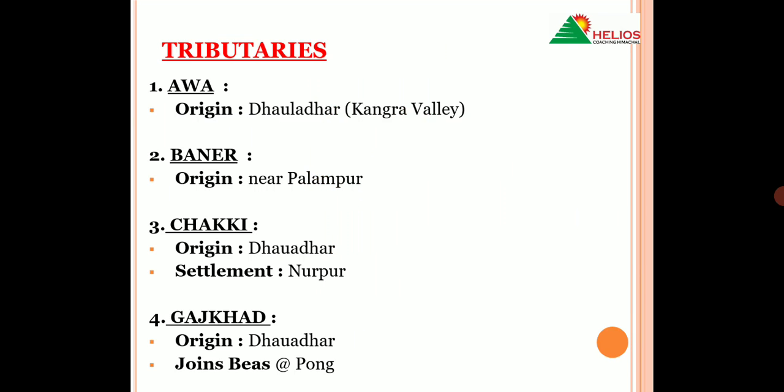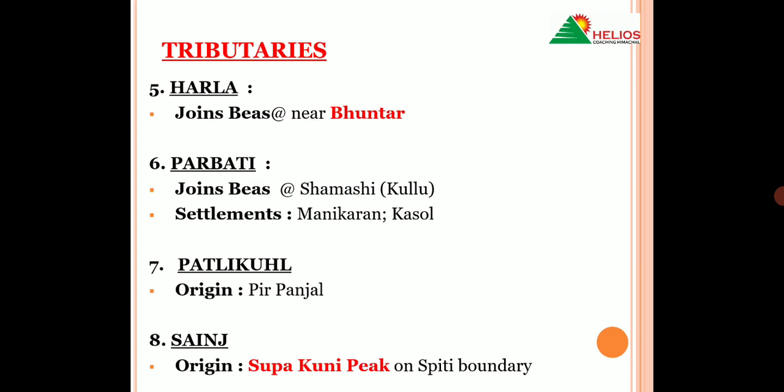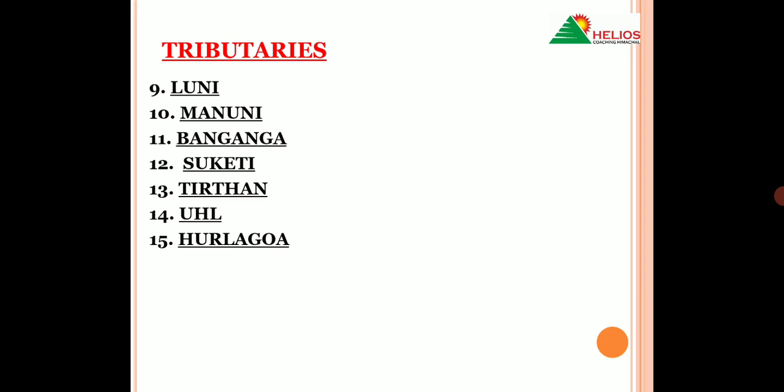Now let's talk about the tributaries of the Beas river. Pehli tributary hai Awa, jis ka origin hota hai Dholadhar se, Kangra valley mein. Baner, jo ki palampur ki nasdik se originate hoti hai. Agli hai Chakki Khad, jo ki Dholadhar se originate hoti hai, aur is nadhi ke kinaare jo important settlement hai woh hai Noorpur. Gaj Khad ka origin Dholadhar se hota hai, aur yeh Beas ko join karti hai Pong mein. Harla nadhi Beas ko join karti hai Bhuntar ki nasdik. Aur Parbati nadhi Beas ko join karti hai Kullu district mein Shamshi mein — important settlements jo Parbati nadhi ki kinaare hain woh hain Manikaran aur Kasol. Agli tributary hai Patli Kul, jis ka origin hota hai Peer Panjal se. Aur Sanj nadhi ka origin hota hai Supakuni Peak se, jo ki lay karti hai Kullu aur Spiti ki boundary mein. Other tributaries of Beas hain: Looni, Manuni, Baan Ganga, Suketi, Teer Than, Ul aur Hurla Goa.